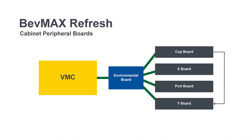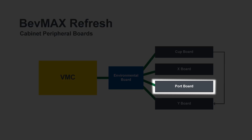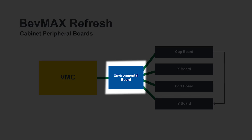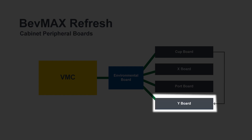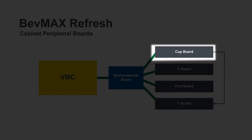What are the cabinet peripheral boards? Cabinet peripheral boards in a BevMax Refresh: port board, environmental board, X board, Y board, cup board. All of that is your cabinet peripheral boards.